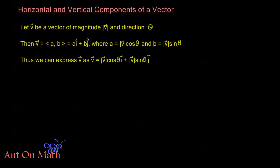Hello and welcome back to Anton Math. In this video we're going to spend some time relating our horizontal and vertical components of a vector to the magnitude and the direction of that vector. So let's take a look at how we can do this. Let V be a vector of magnitude |V| and direction theta.